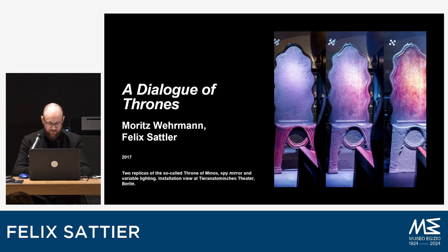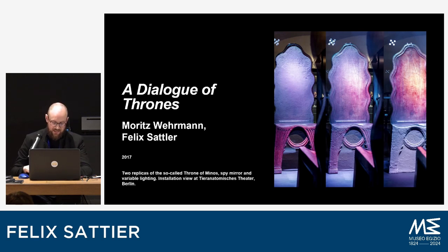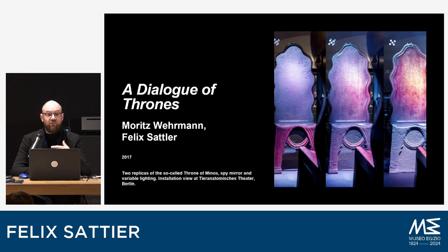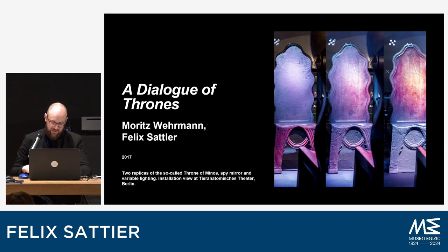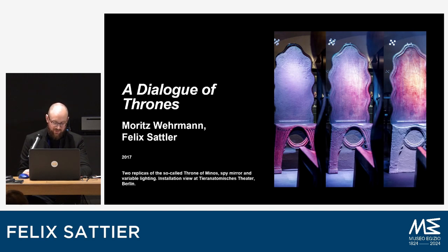The object at the center of our project is the so-called Throne of Minos, found in 1901 by British archaeologist Arthur Evans at the Palace of Knossos in Crete. Over time, so many replicas of this object were made in many different contexts. Until today you find wooden replicas at the Palace of Knossos right next to the original, which is still on site. Evans himself commissioned a series of wooden replicas that he used for reenactments of what he believed were Minoan rituals and festivities at his own house.